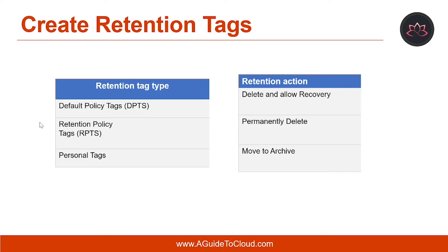Let's look at the three types of retention tags you can choose from. The first is default policy tags, known as DPTs — these are the default retention tags for the entire mailbox. The next type is retention policy tags, or RPTs, which apply to default folders, and the only valid action is to delete or delete permanently. The last type is personal tags, which become available in Outlook and Outlook on the web, and users can apply them to a mailbox folder or an individual item. When creating a retention tag, you must indicate what type of action the tag should apply to messages and folders.